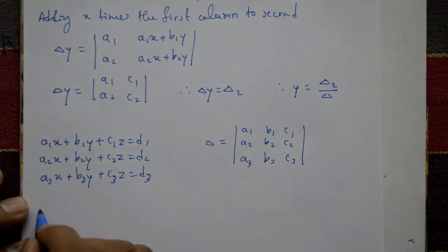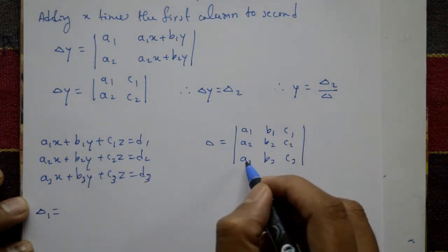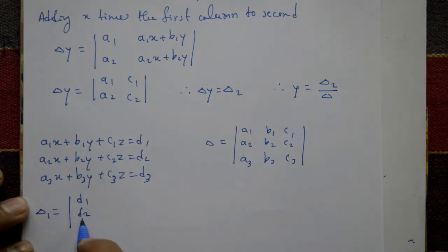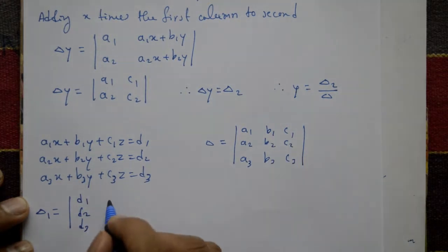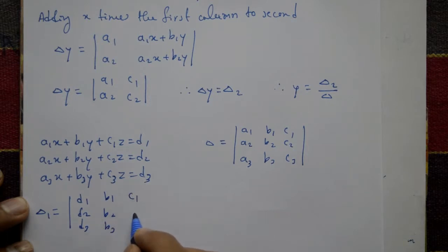Delta 1 is formed by replacing the first column with d1, d2, d3 — the right-hand side values. The remaining columns stay the same: b1, b2, b3 and c1, c2, c3.